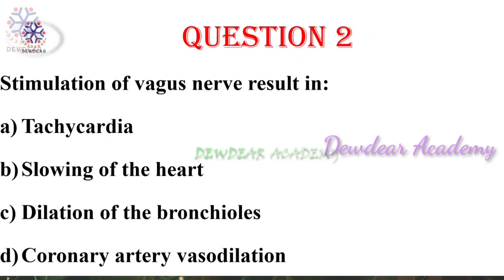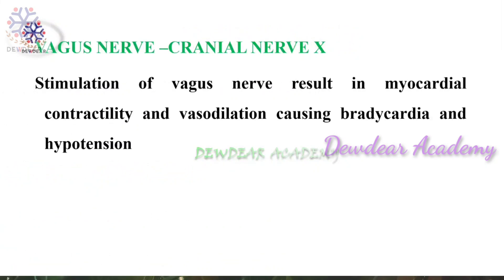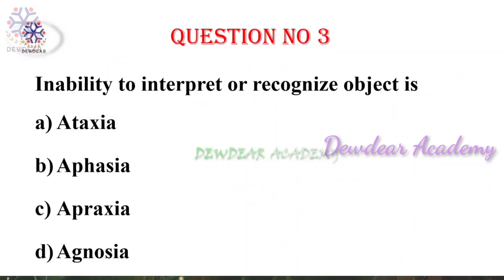The right answer is slowing of the heart. Vagus nerve is the tenth cranial nerve, and stimulation of vagus nerve results in decreased myocardial contractility and vasodilation causing bradycardia and hypotension. So the answer is slowing of heart rate, and it also causes hypotension.